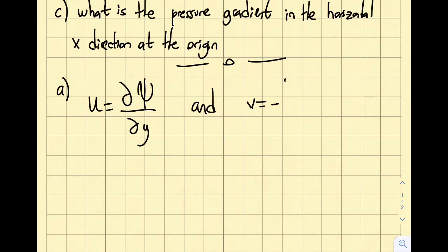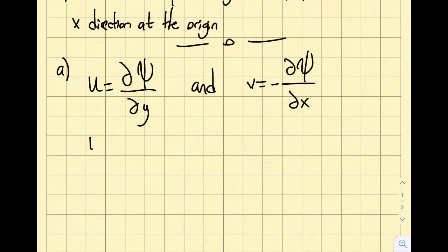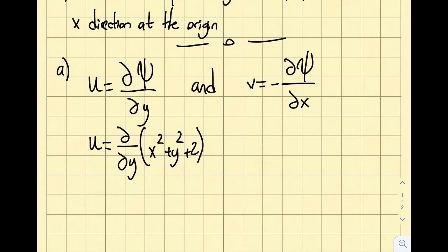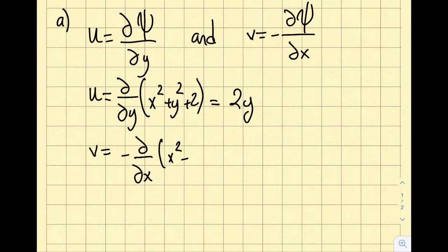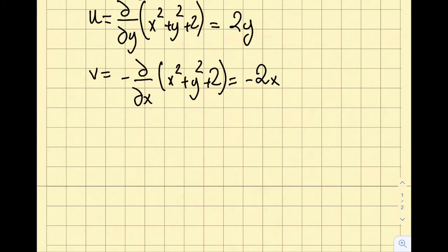This is the relationship between the stream function and the velocities in the x and y directions. Inserting the stream function x² + y² + 2, the partial derivative with respect to y gives 2y — that is my velocity u in the x direction. Similarly, taking minus the partial derivative with respect to x of x² + y² + 2 gives minus 2x — that is my velocity v in the y direction.